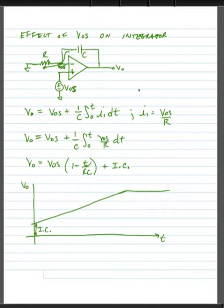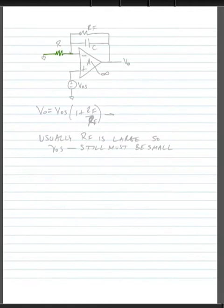One way to fix this is by placing a resistor across the capacitor. We can reduce the gain at low frequency by providing DC feedback through a resistor called RF. Our circuit is the same except we've added RF in parallel with C, and we still have our offset voltage.